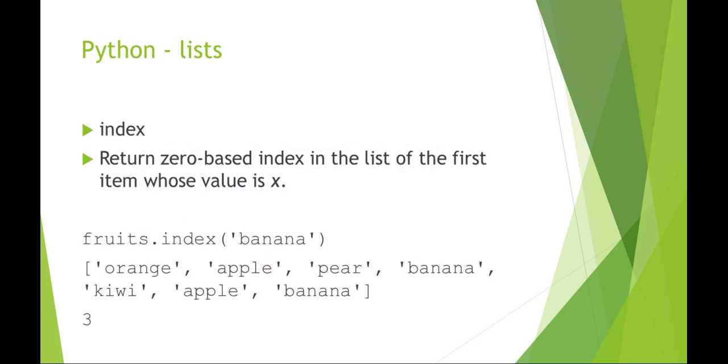Index is for determining where an item is in the list. So if I want to know where banana is in the list, we recall that lists always start at index zero. If I said fruit list dot index banana: orange is zero, apple's one, pear's two, banana's three, so it'll return three. That's the first instance of that item that I'm looking for in the list. It returns that index value.